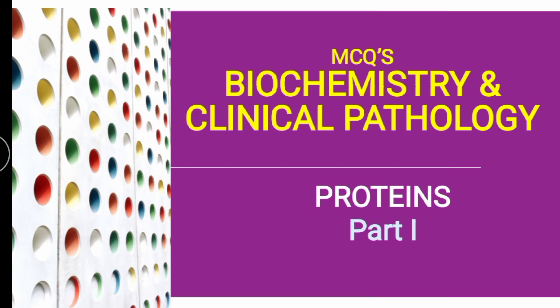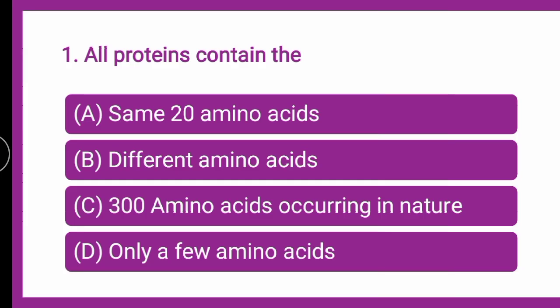To start with question 1 from proteins part 1: all proteins contain — whether all proteins contain the same 20 amino acids, whether they contain different amino acids, whether they contain 300 amino acids occurring in nature, or only a few amino acids. Put your answer in the comment box and verify after the explanation. Come on, put your answers fast in the comment box — we will go for the explanation.